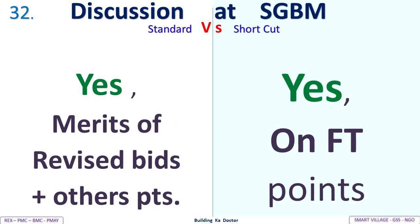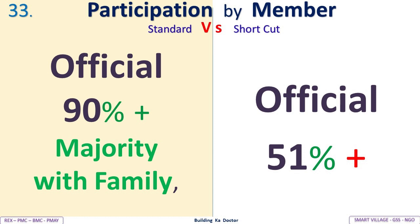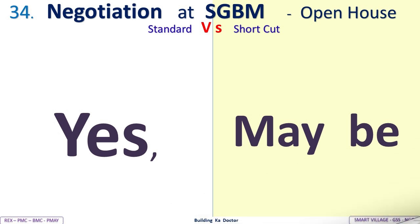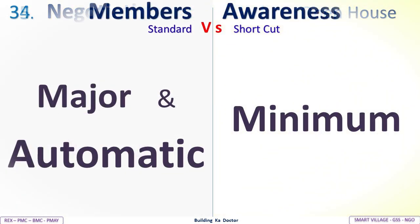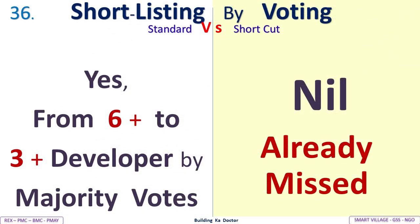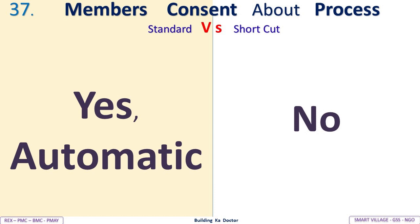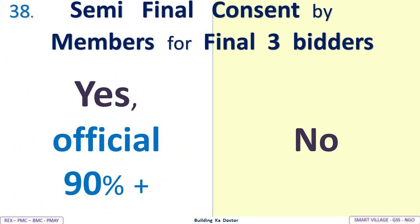Discussion at SGBM: Standard reviews merit of all revised bids plus other points; shortcut reviews only FT points. Participation by members: Standard — official 90% plus majority with family; shortcut — official 51% plus. Negotiation at SGBM open house: Standard — yes; shortcut — maybe. Members' awareness: Standard — major and automatic; shortcut — minimum. Shortlisting by voting: Standard shortlists from 6-plus to 3-plus developers by majority votes; shortcut — nil, already missed.